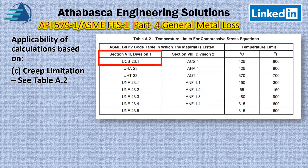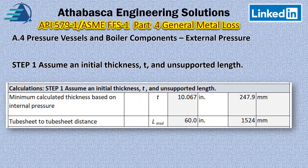Because we are working with Section 8 Division 1, we have to look at UCS 23-1. When we do, we find that our temperature limitation is up to 425 degrees Celsius or 800 Fahrenheit. We look at the assumed initial thickness T, which is based upon the calculated thickness from the internal pressure. That gives us 10.067 inches or 247.9 millimeters for the shell. The tube-to-tubesheet distance, which is the unsupported length, is 60 inches or 1524 millimeters.